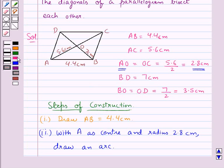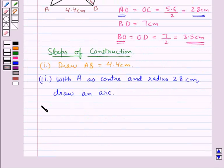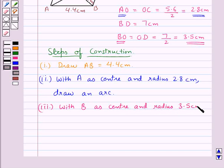Now next, since we have BO is equal to 3.5 cm, so in the next step, with B as the center and radius 3.5 cm, we draw another arc cutting the previous arc.